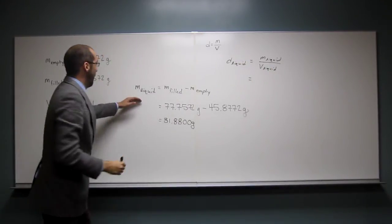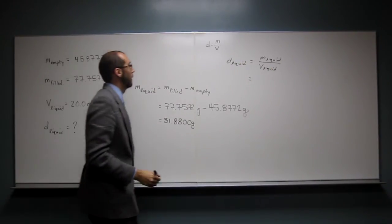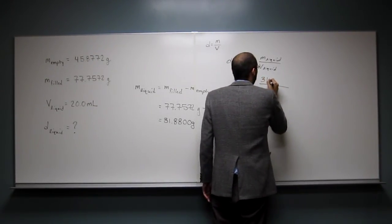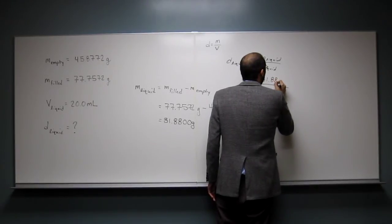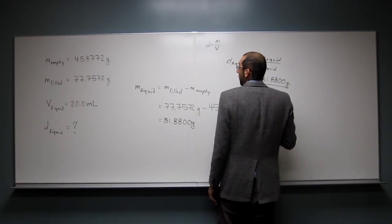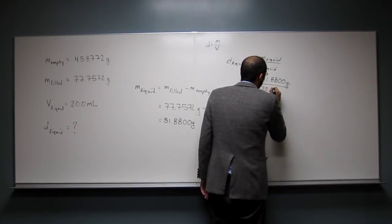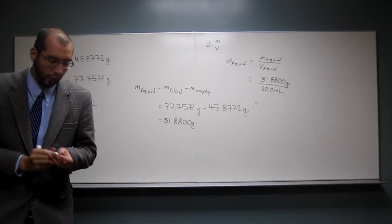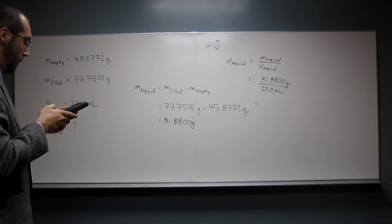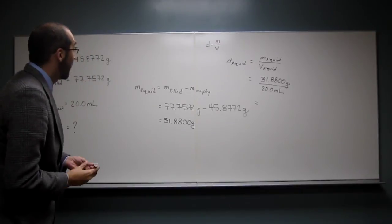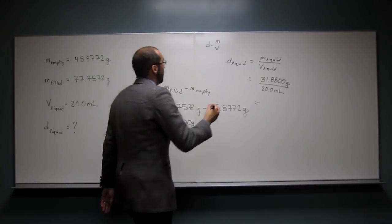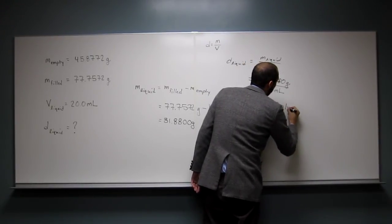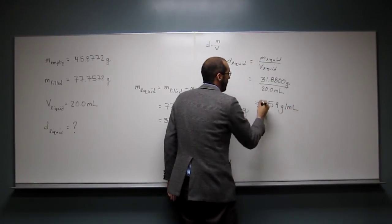And so we've got the mass of the liquid, the volume of the liquid, we should be able to figure out the density, right? So mass, 31.8800 grams, volume, 20.0 mils, and I think this says it wants it in grams per mil, so divide that by 20, and that's going to be three sig figs, so 1.59 grams per mil is the density of this.